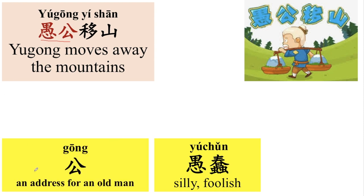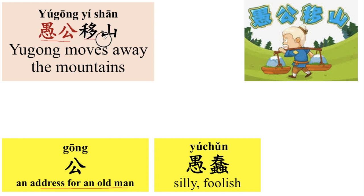公，公 is an address for an old man. 愚公。But this is used in the past; right now we don't use it very often anymore. 好，那愚公，愚公。移山，移山。移 means to move. 山 means mountains. 好，愚公移山。